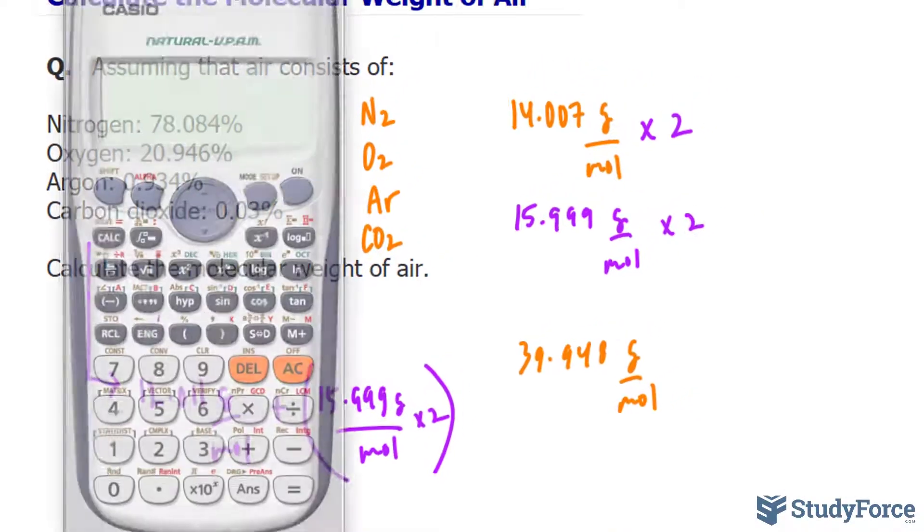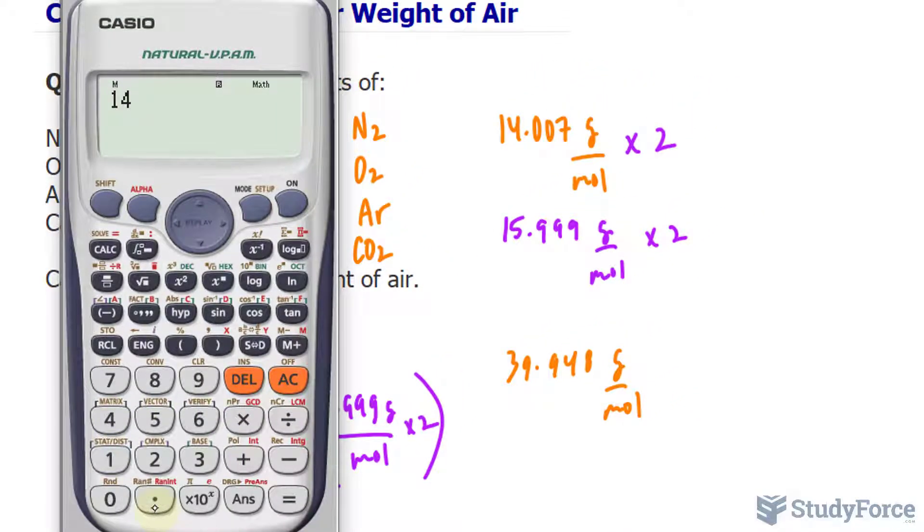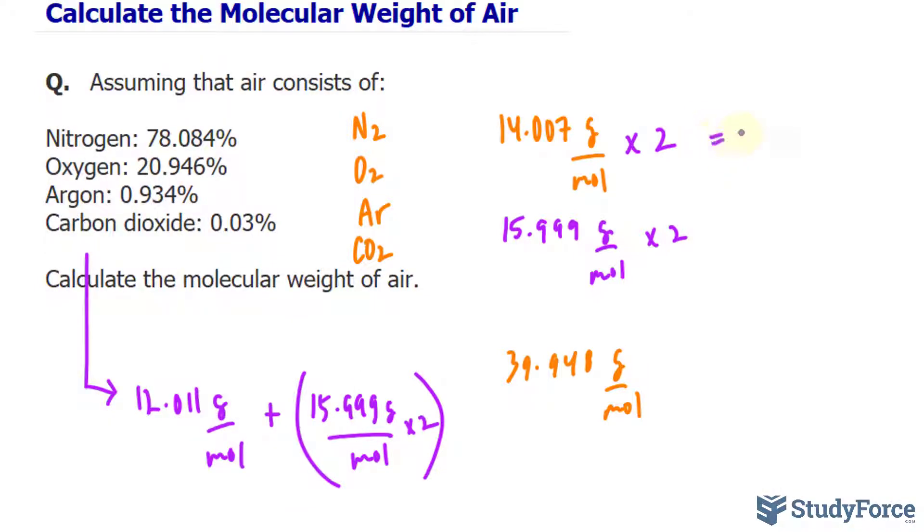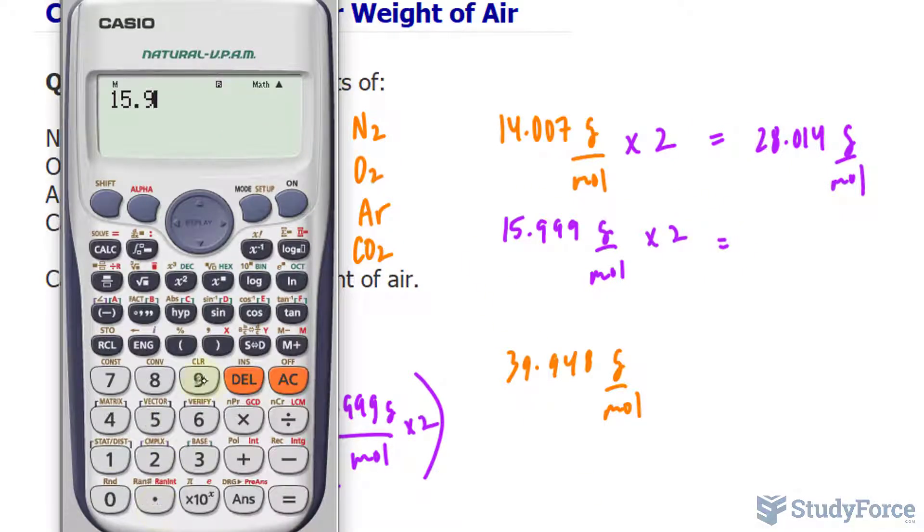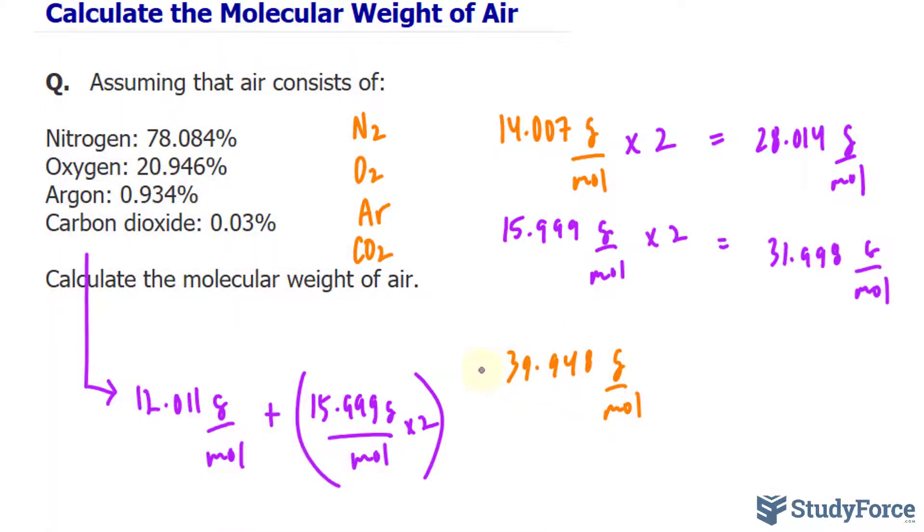Now we will use our calculator to find out what each of these are equal to. This one is 28.014. Similarly, for this, we have 15.999 times two. This one remains the way it is.